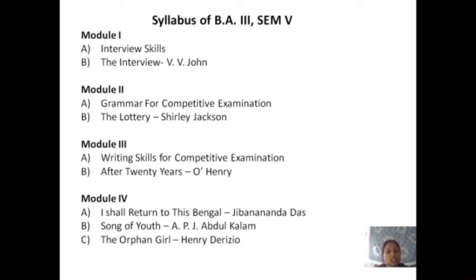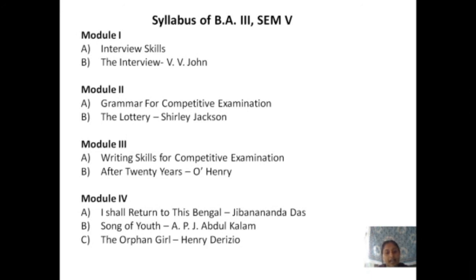Module number 4 is the last module. In this module, there are 3 poems from different writers. The first poem is 'I Shall Return to This Bengal,' written by the Indian Bengali poet Jibanananda Das. The next poem is 'Song of Youth,' written by the well-known personality A.P.J. Abdul Kalam. The last poem is 'The Orphan Girl,' written by Portuguese-Indian writer Henry de Reggio.